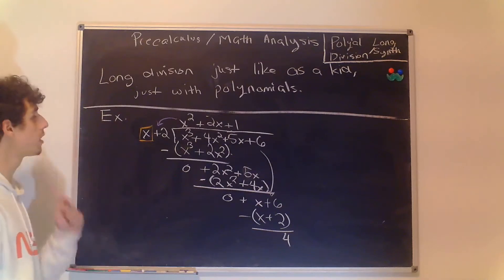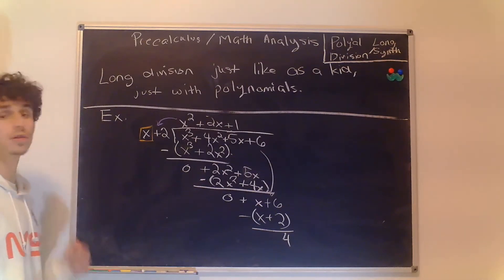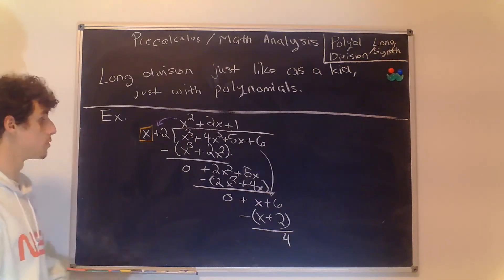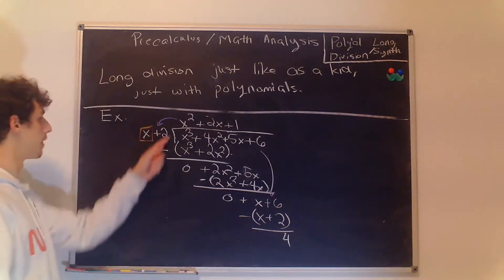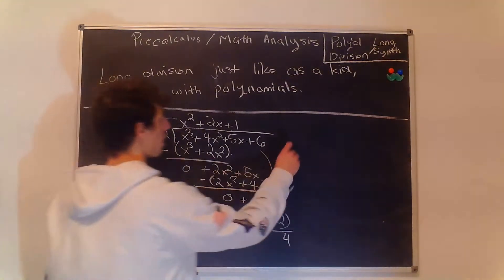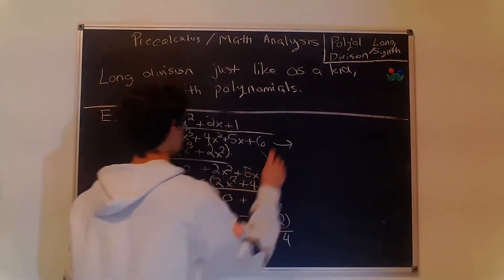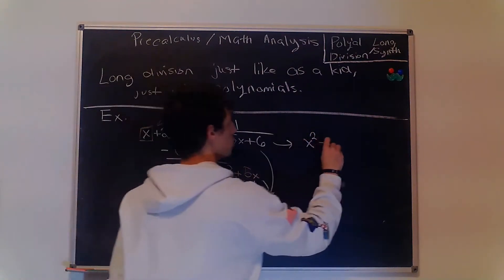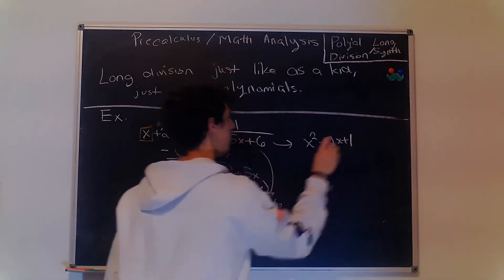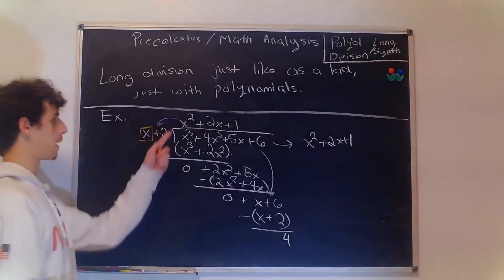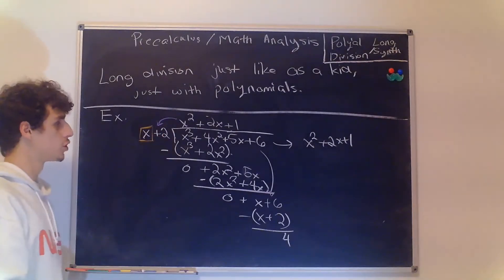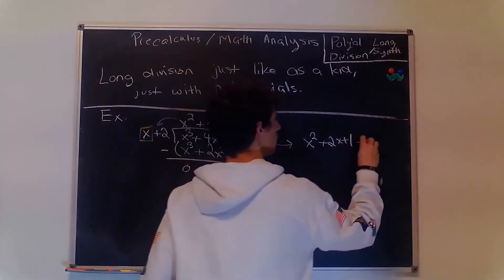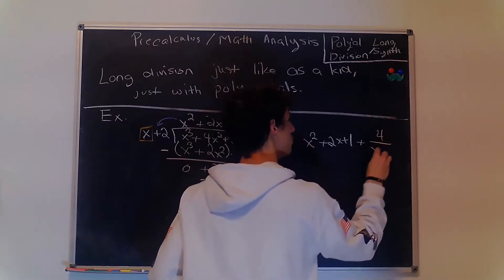We group them together and get a remainder of 4. We treat remainders with long division of polynomials the same as with real numbers — we take the remainder and divide it into the divisor. So our final answer is x squared plus 2x plus 1, which comes from the top of this division bar, plus 4 over x plus 2.